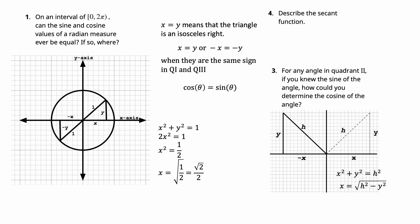As we go around, in the second quadrant they can't be equal because x is negative and y is positive. Same in the fourth quadrant — they can't be equal because y is negative and x is positive. But in the third quadrant, both x and y are negative, so they can be equal again there. So we have two spots where sine and cosine are actually equal to each other.